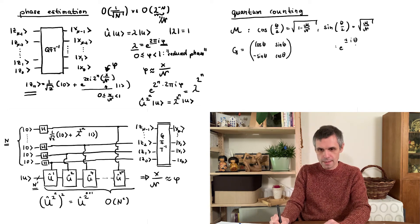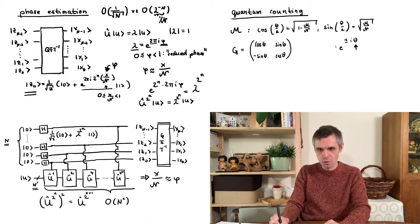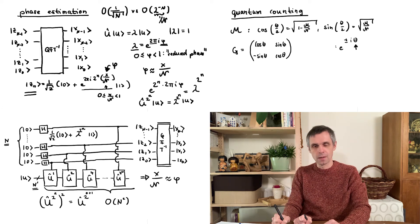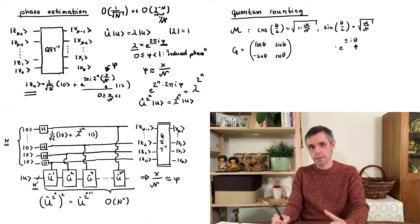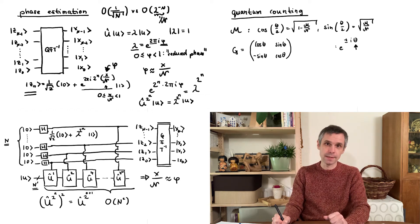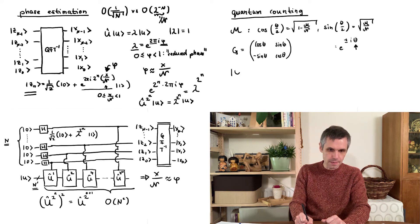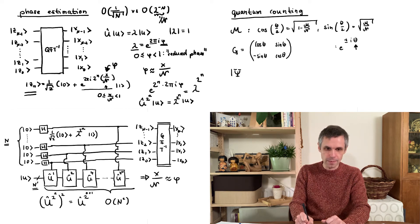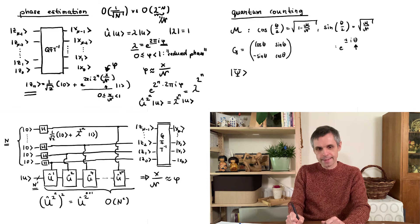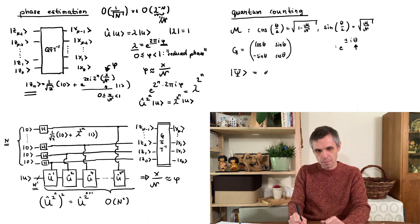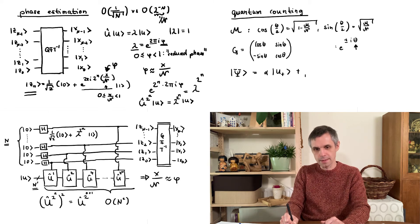So by measuring this angle theta with sufficient precision, we can determine the value of curly m. Now, we cannot assume that we know the corresponding eigenvectors because they actually depend on capital X and capital Y. But we know that the state capital Psi lies within this two-dimensional subspace. And therefore, this is a certain superposition of the two corresponding eigenstates, which I denote as u plus and u minus.